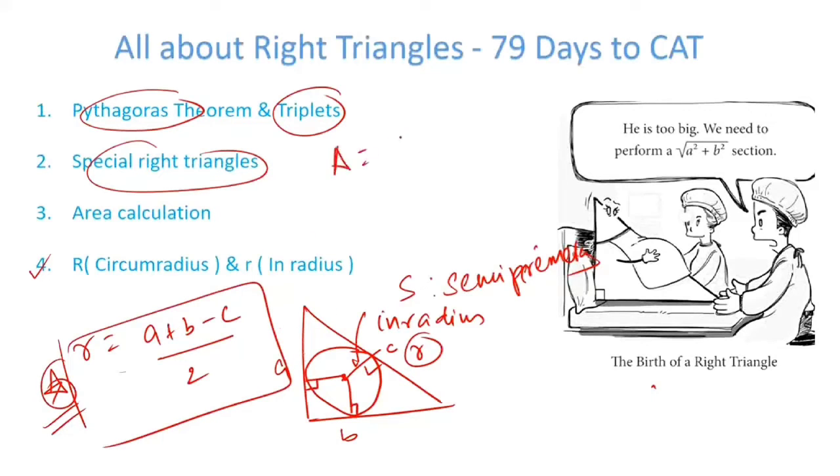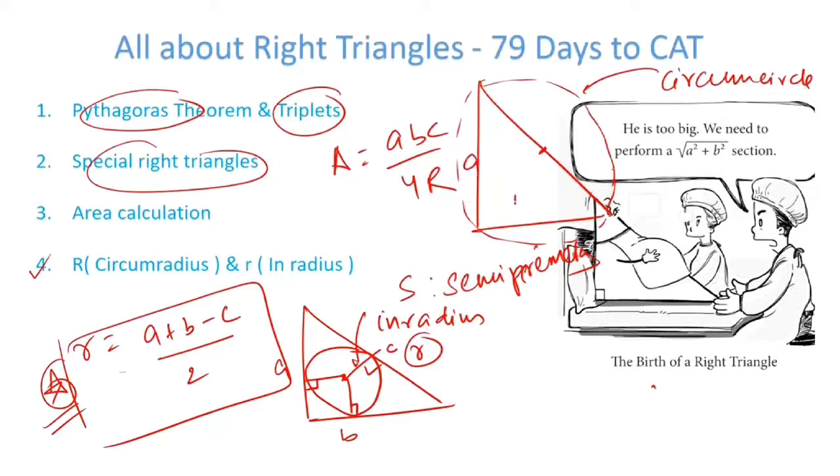Another way of calculating area is a into b into c upon 4 capital R, where capital R in this case is the radius of the circle passing through all three vertices. Such a circle is called circumcircle. Radius is called circumradius and it is also half of the hypotenuse. So if this is a, this is b, this is c, then circumradius is half the hypotenuse. Again, a very important aspect of a right triangle.